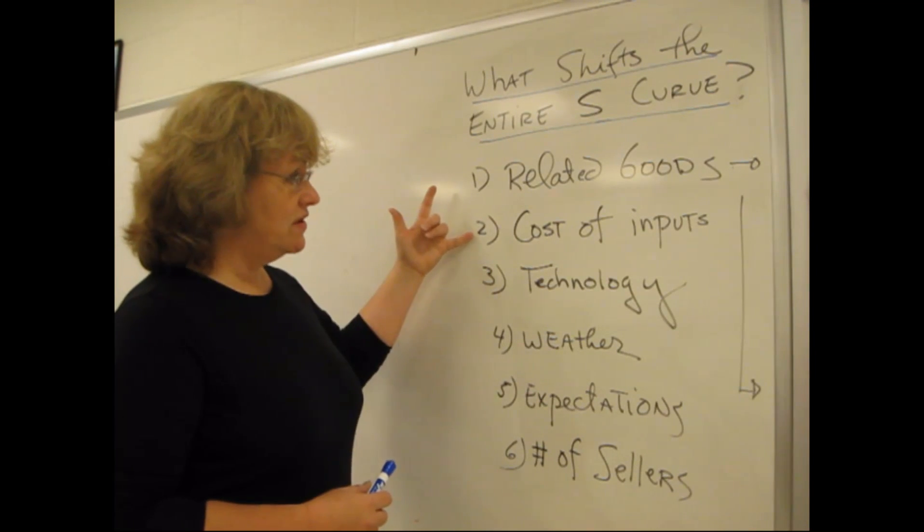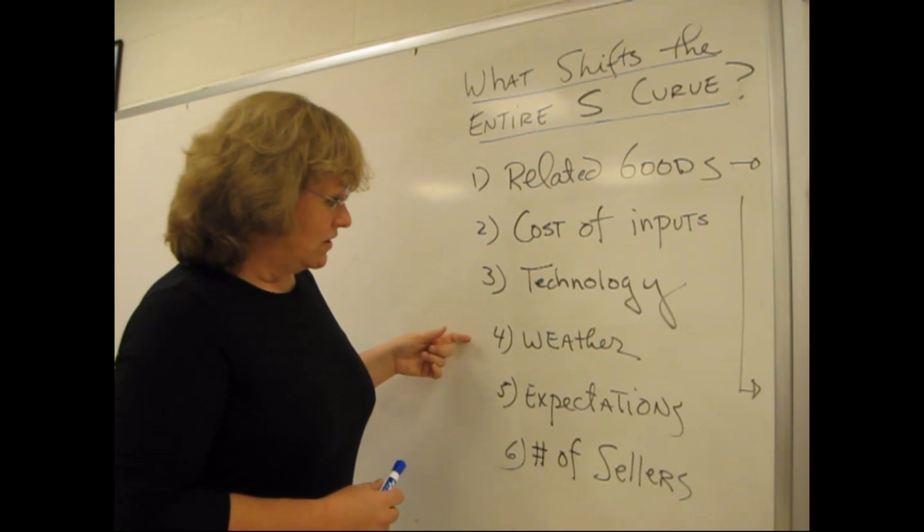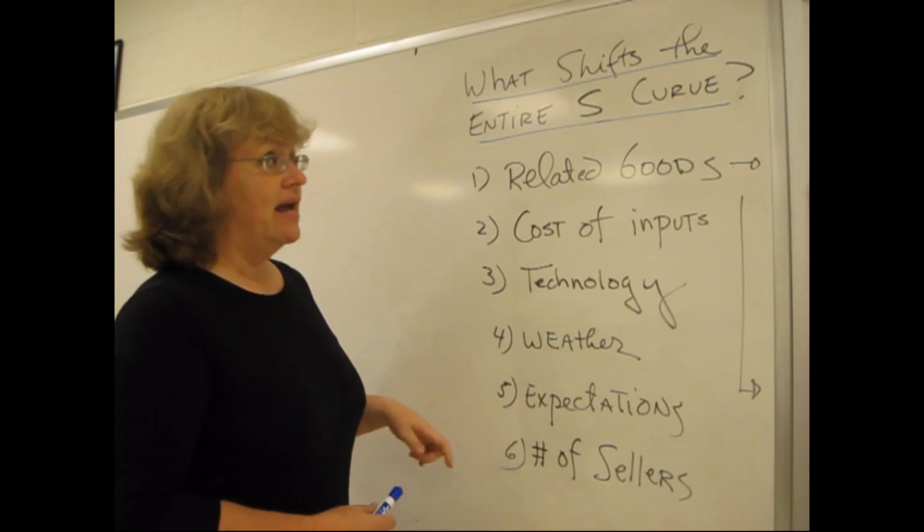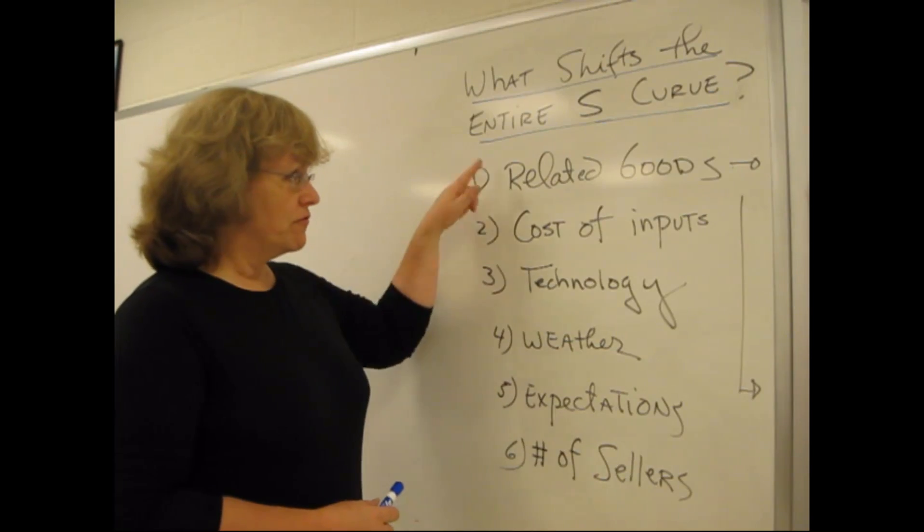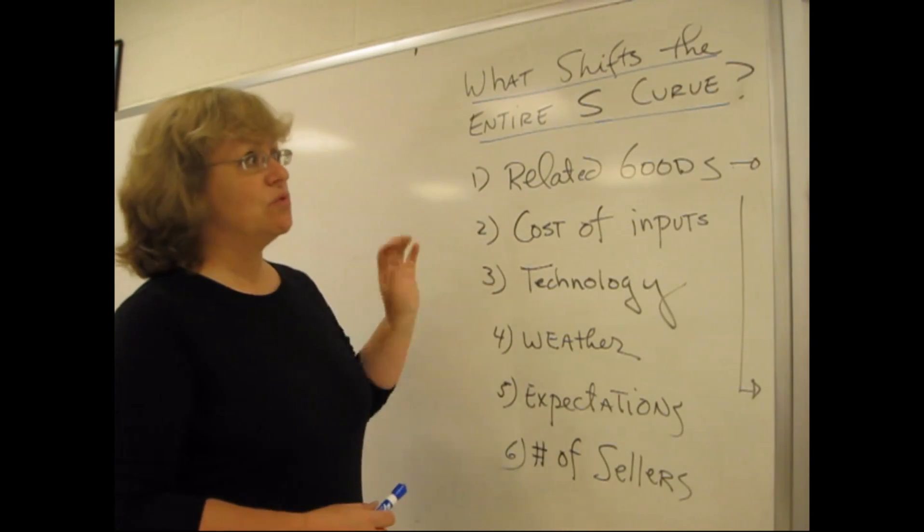Related goods, cost of inputs, technology, weather, expectations, and number of sellers. The first two are the most complex, so we'll talk about those first.